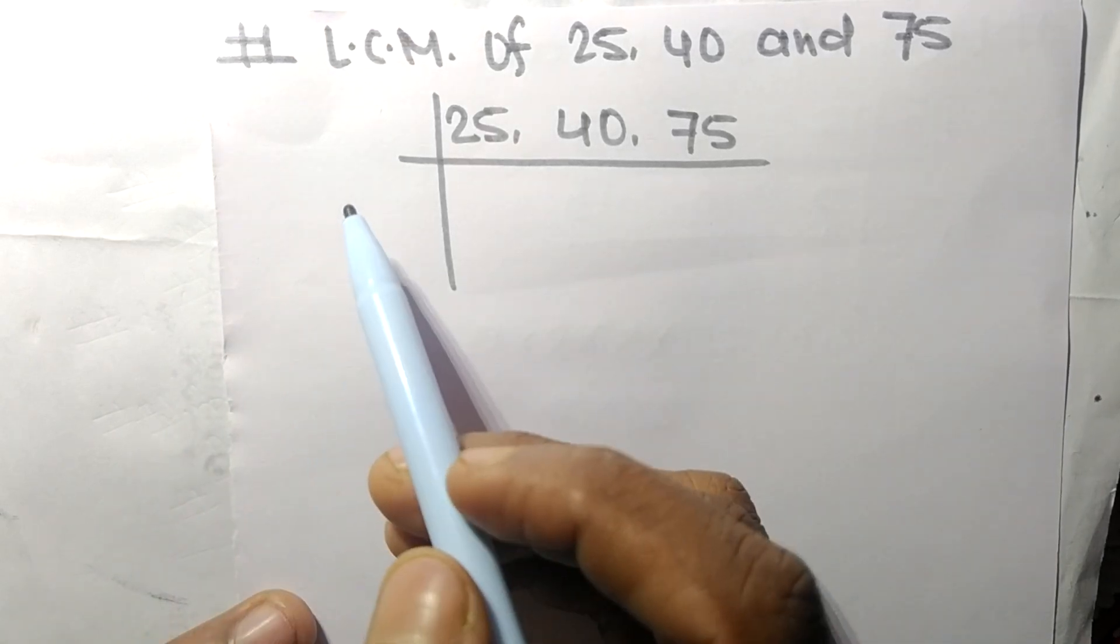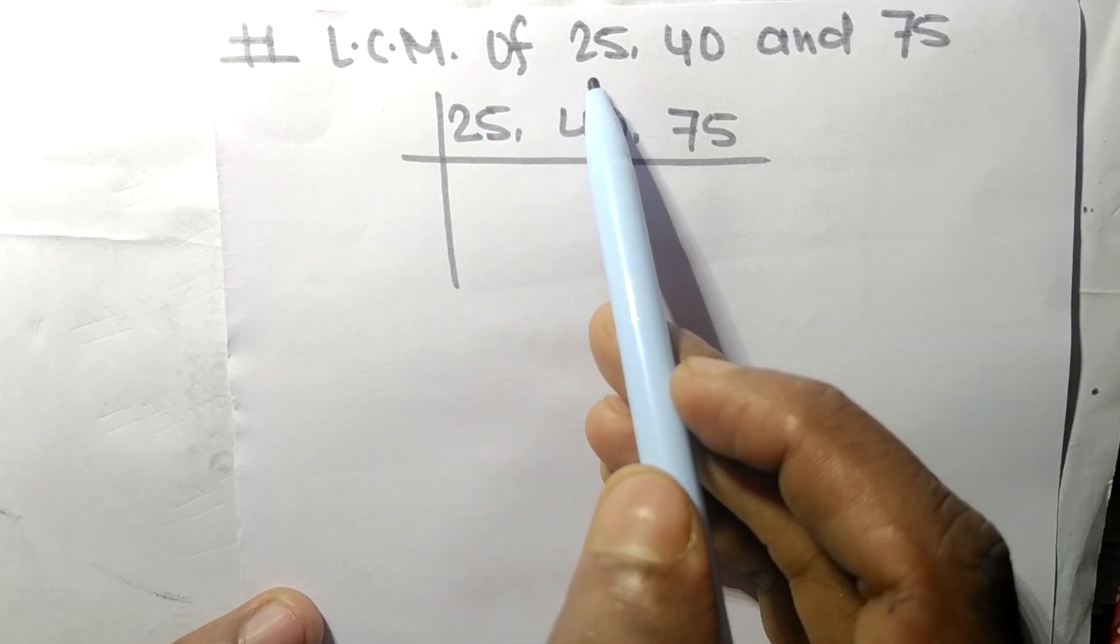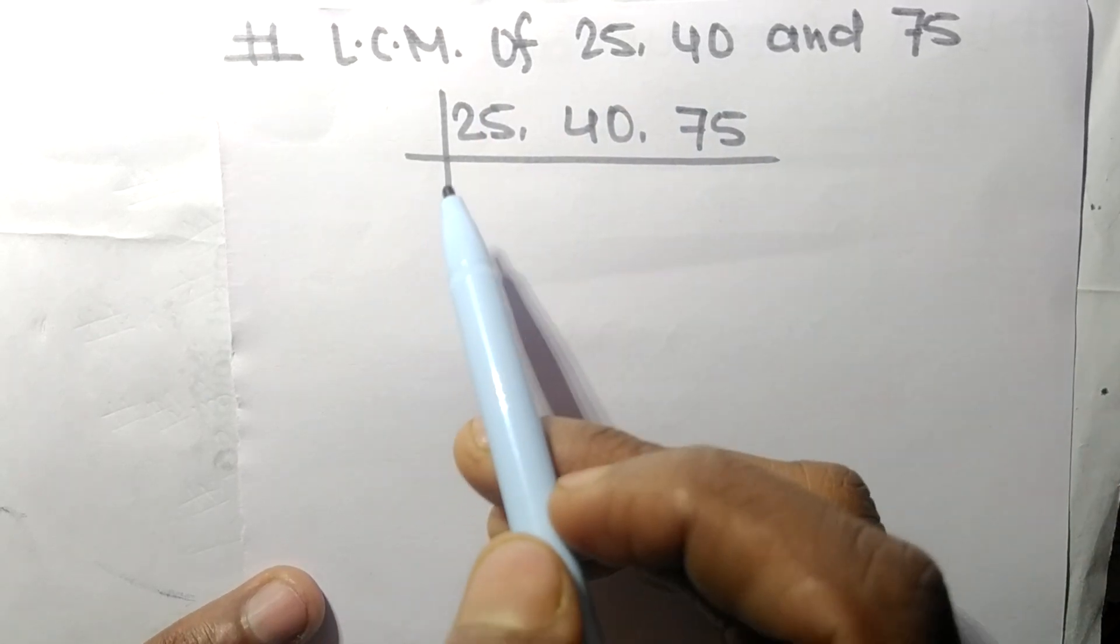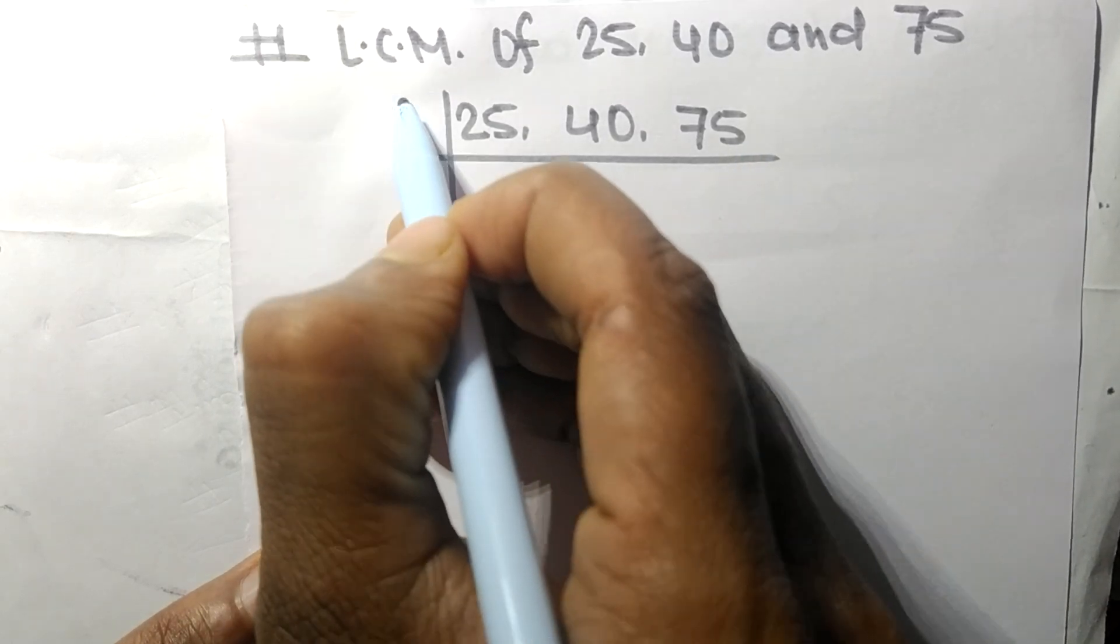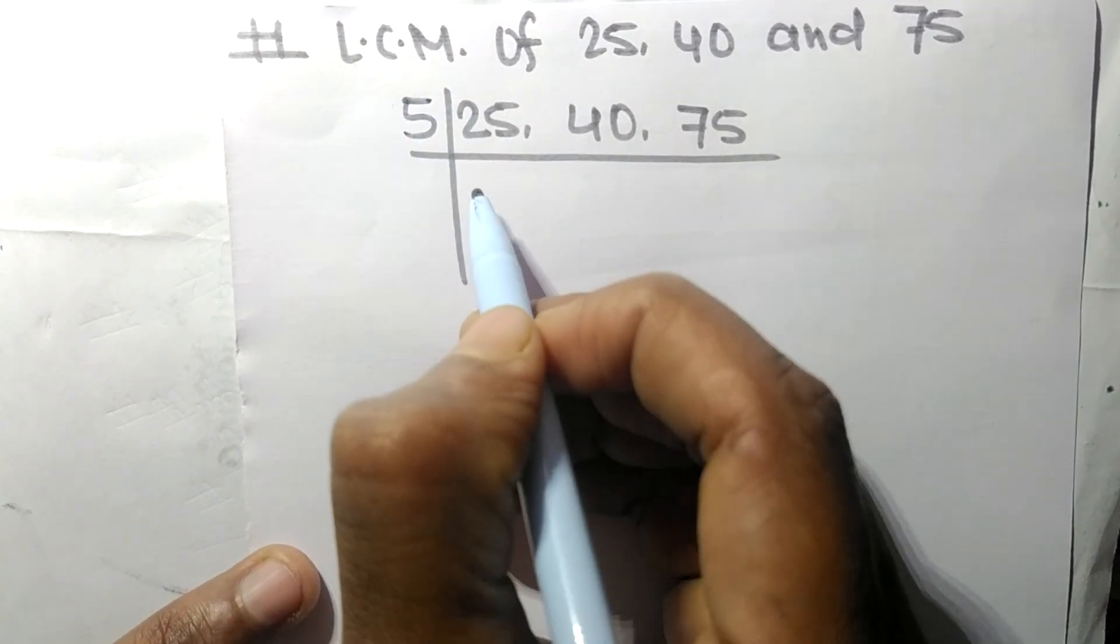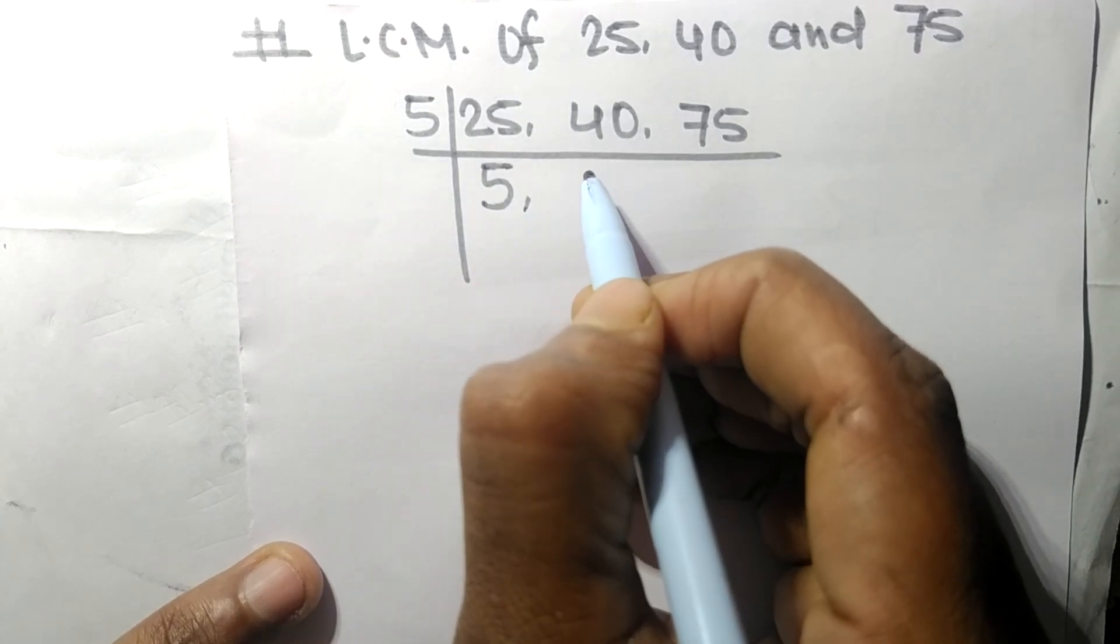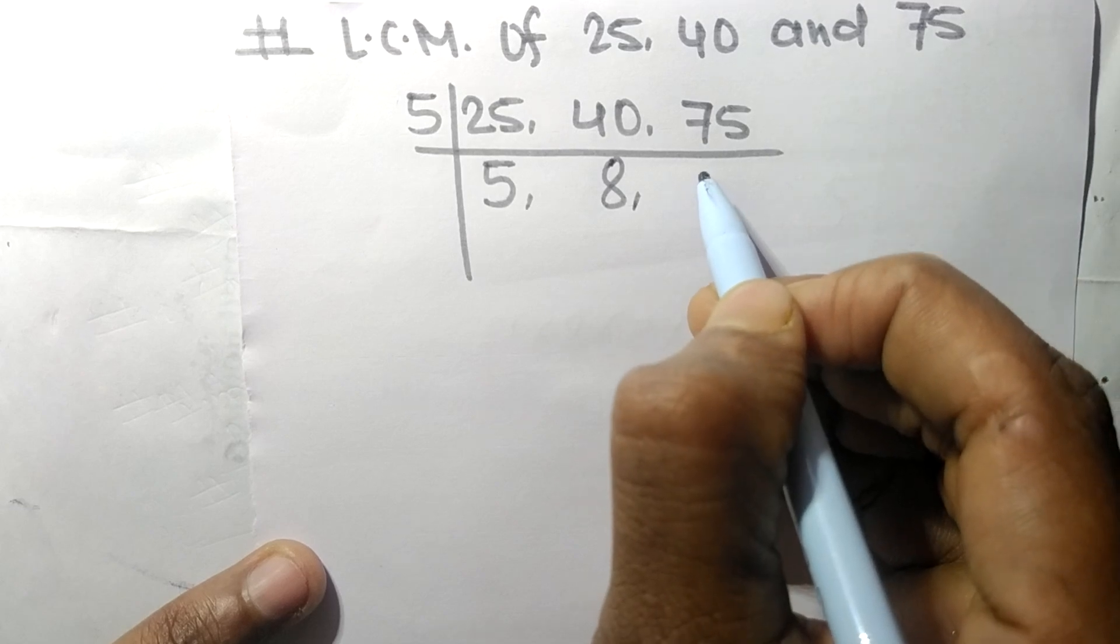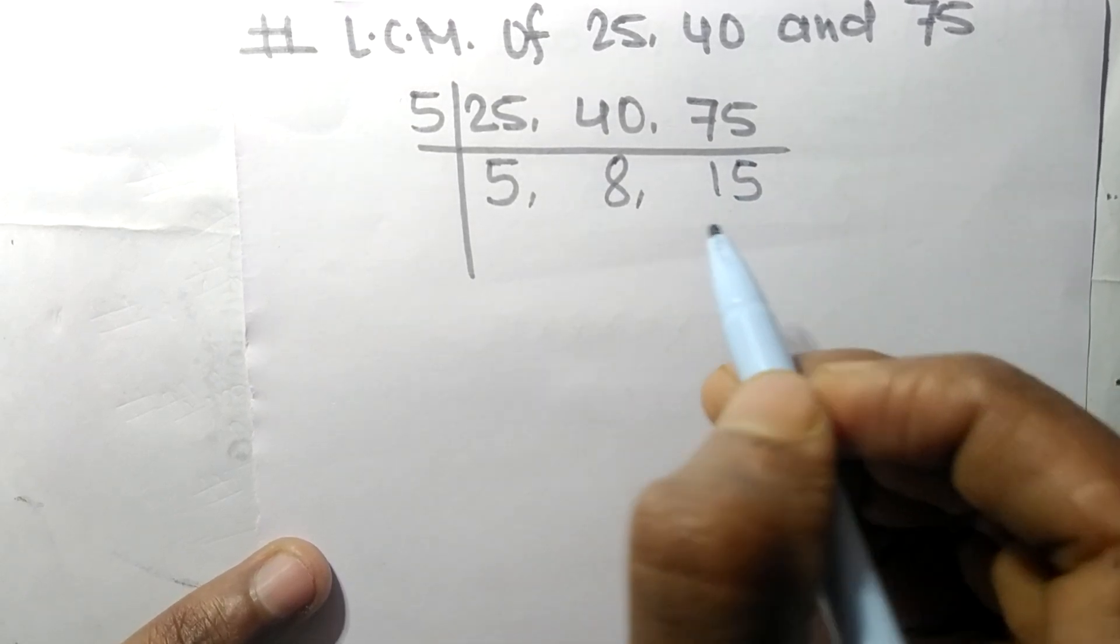So today in this video we shall find LCM of 25, 40, and 75. So these all numbers are divisible by 5. So 5 times 5 means 25, 5 times 8 means 40, 5 times 15 means 75.